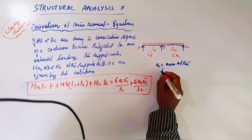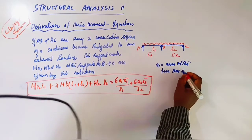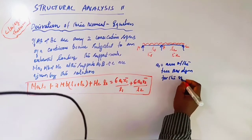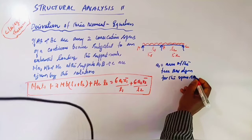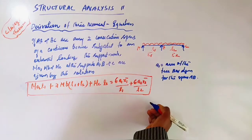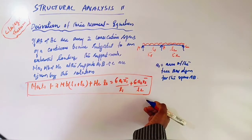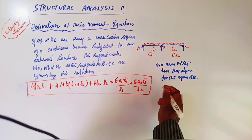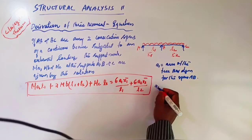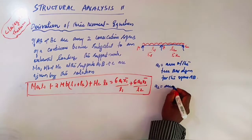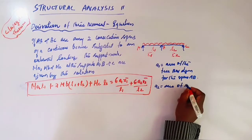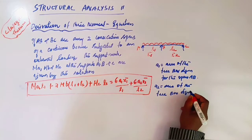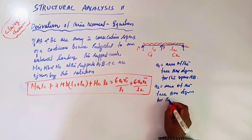A1 is the area of the free bending moment diagram for the span AB, and A2 is the area of the free bending moment diagram for the span BC.